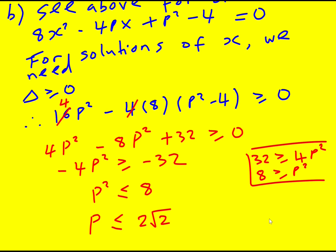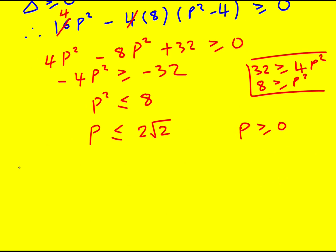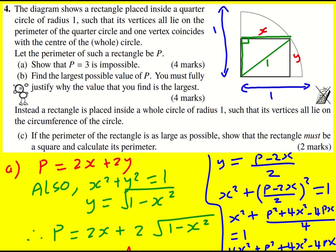We only need to consider positives since p is greater than or equal to 0. Therefore the maximum value of p, since it must be less than or equal to 2 root 2, is 2 root 2. Now technically we haven't verified the value of x — x and y must both be between 0 and 1, exclusive. I need to check that my perimeter actually corresponds to a valid value of x.